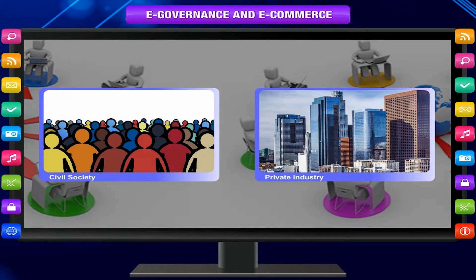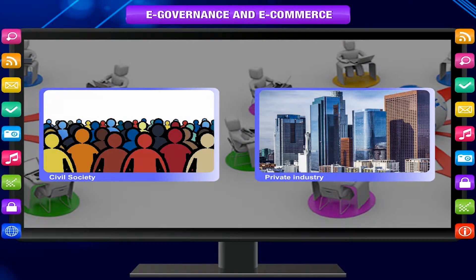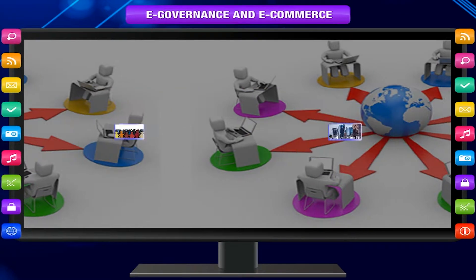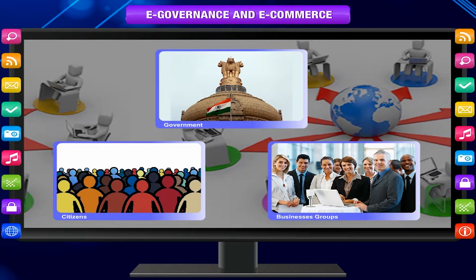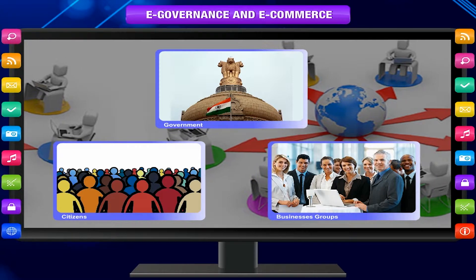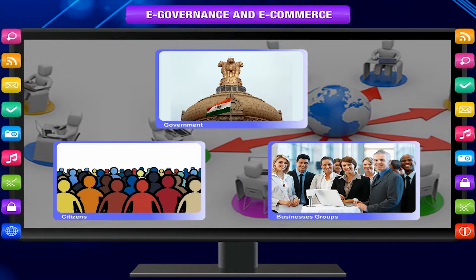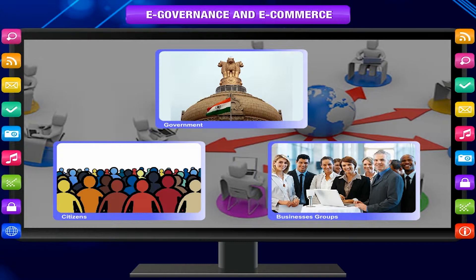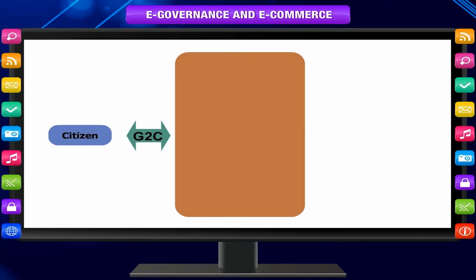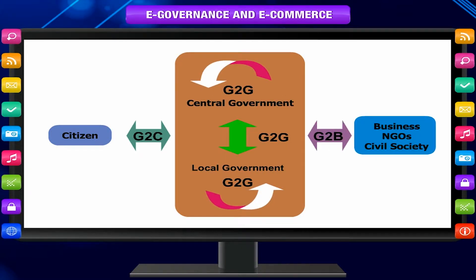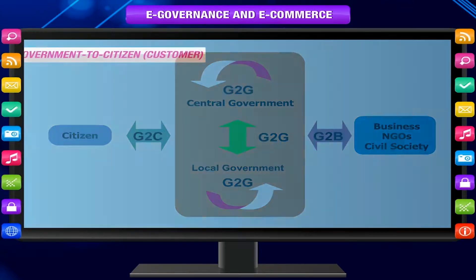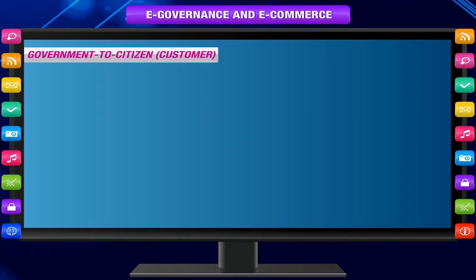The three main target groups that can be distinguished in governance concepts are government, citizens, and business groups. In E-Governance, there are no distinct boundaries. Generally, four basic E-Governance models are available: Government to Citizen, Government to Employees, Government to Government, and Government to Business.